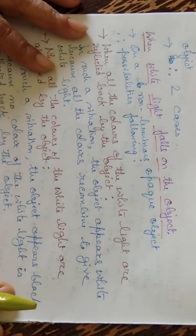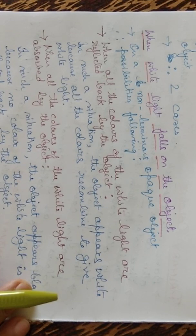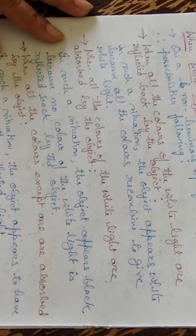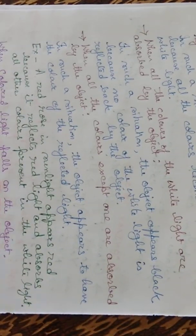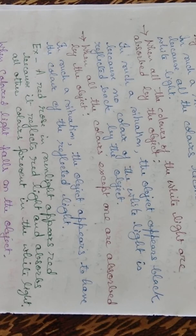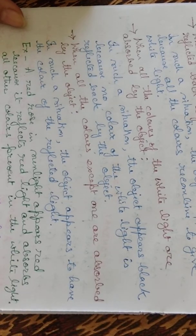When white light falls on a non-luminous opaque object: if all the colors of white light — red, green, blue — are reflected back by the object, the object appears white because all the colors recombine to form white light. If all the colors of white light are absorbed by the object, the object appears black because no color of the white light is reflected back.